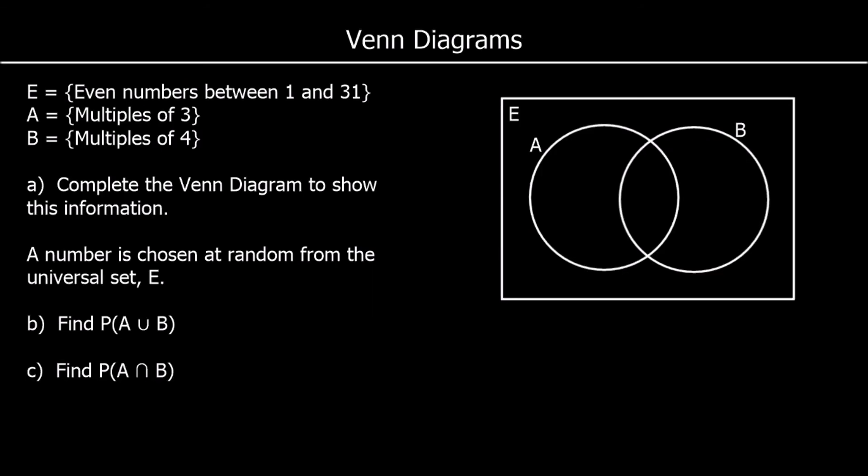And Venn diagrams. So we've got to complete a Venn diagram here. We've got all even numbers. So in our Venn diagram, we're going to put all the even numbers between 1 and 31. In our A circle are going to be multiples of 3. And our B circle are going to be multiples of 4. So the multiples of 3, that's the 3 times table. And we only want the even ones. So that's actually the 6 times table. So it's going to be 6, 12, 18, 24 and 30.